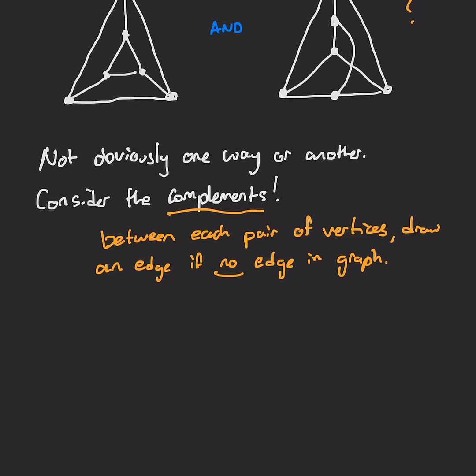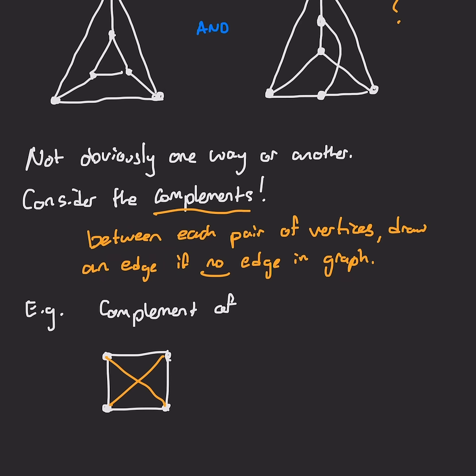So take, for example, this graph on four points, where the edges are all the outside. So it's a square. The complement of this graph, then, is the diagonal graph, which is isomorphic to two lines like this.